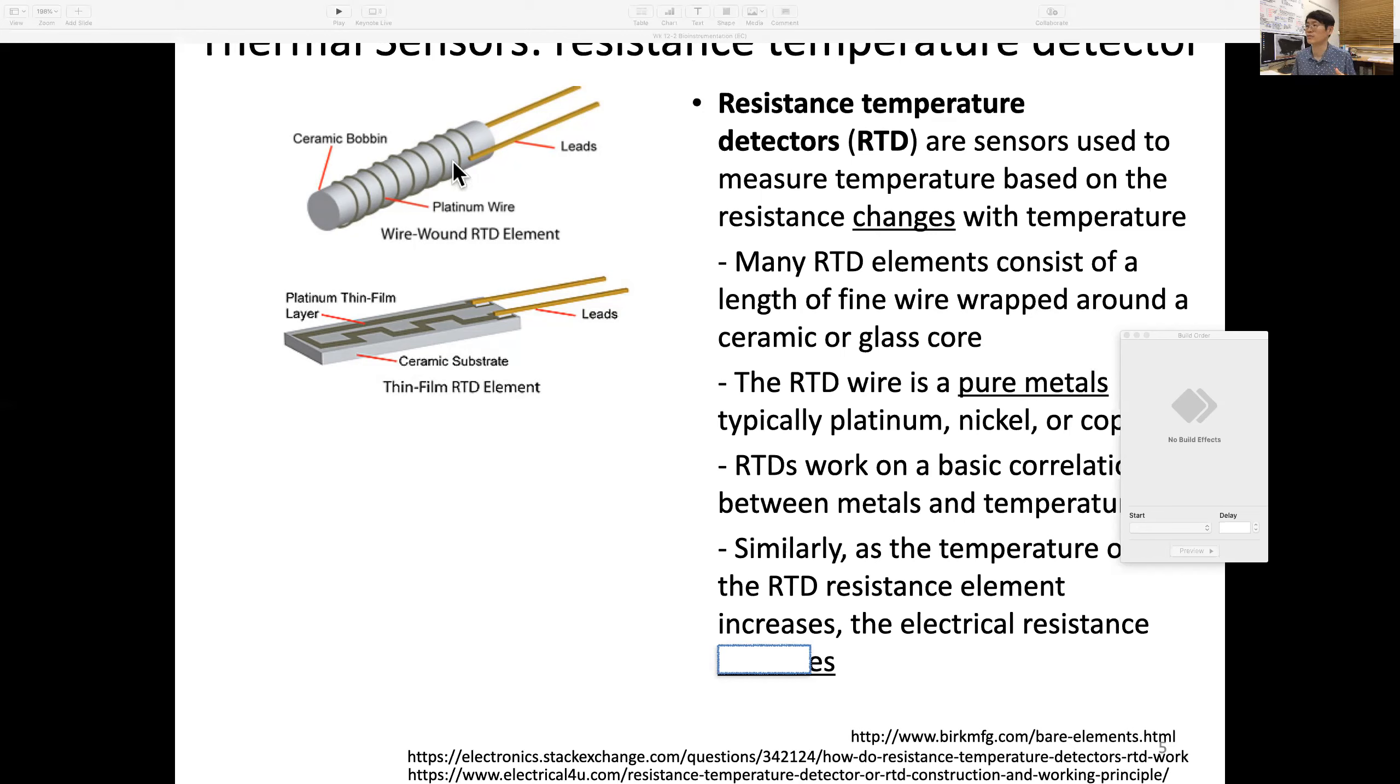Here are two examples with ceramic and very fine wires wrapping around. When temperature changes, substrate thermal expansion affects the wire, which can be used for temperature sensing. This platinum thin film layer is on ceramic substrate with a lid.